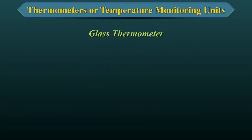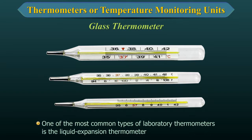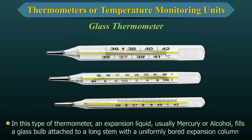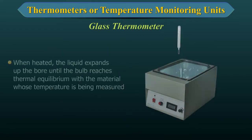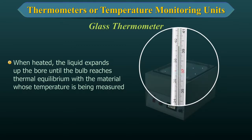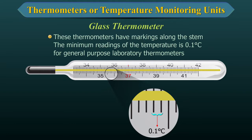Glass Thermometers. One of the most common types of laboratory thermometers is the liquid expansion thermometer. In this type of thermometer, an expansion liquid, usually mercury or alcohol, fills a glass bulb attached to a long stem with a uniformly bored expansion column. When heated, the liquid expands up the bore until the bulb reaches thermal equilibrium with the material whose temperature is being measured. These thermometers have markings along the stem; the minimum reading of temperature is 0.1 degrees Celsius for general-purpose laboratory thermometers.